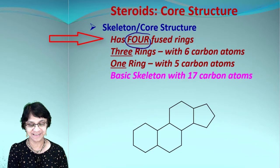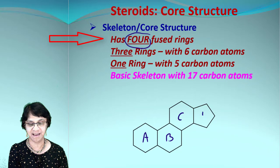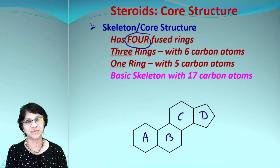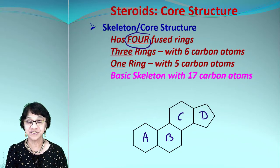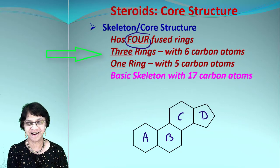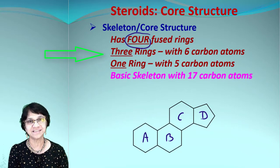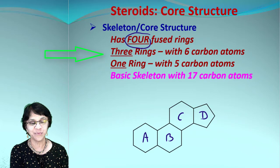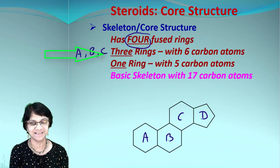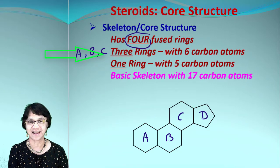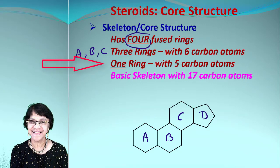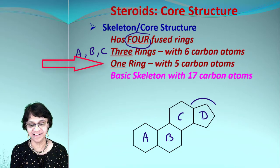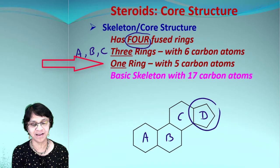This is ring A, ring B, ring C, and ring D. So we got four rings. One more difference: there are three rings which got six carbon atoms. Those are A, B, and C—each one got six carbon atoms. And there is only one ring which is made up of five carbon atoms.